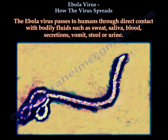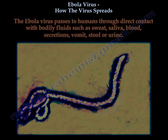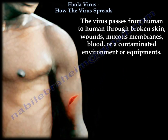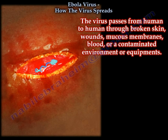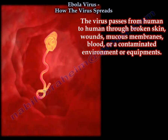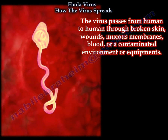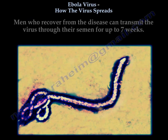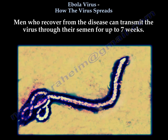The Ebola virus passes to humans through direct contact with bodily fluids such as sweat, saliva, blood, secretions, vomit, stool, or urine. The virus passes from human to human through broken skin, wounds, mucous membranes, blood, or contaminated environments or equipment. Ebola can also be contracted from an infected person after death — in some cultures, mourners may come into direct contact with the virus during bathing of the body of the deceased. Men who recover from the disease can transmit the virus through their semen for up to seven weeks.